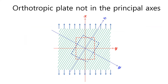Let's think about the orthotropic plate of which axis is not corresponding to the principal axes. In this picture, the blue x and y axes are the principal axes. Mechanical properties become much different when you choose the red x and y axes rather than the principal axes of the blue x and y axes.